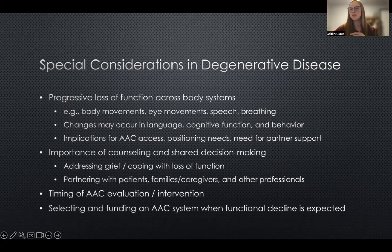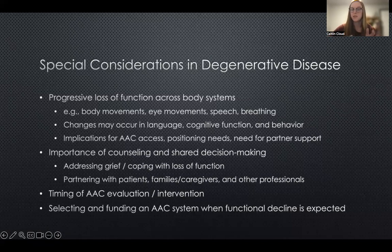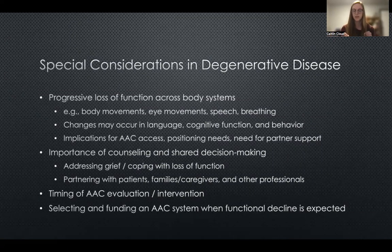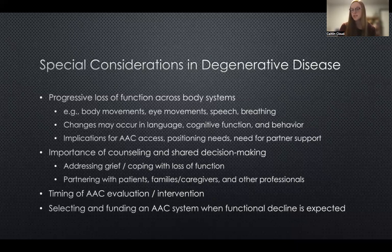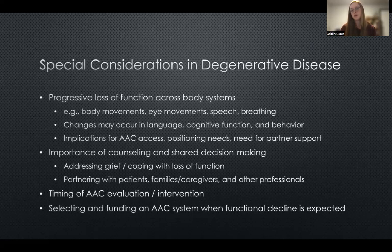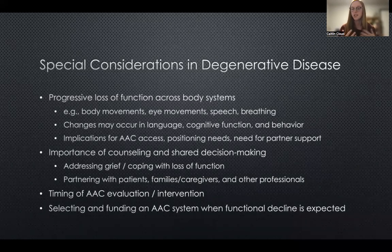Some overarching considerations for degenerative disease: when working with someone who has a degenerative condition, they're beginning to experience a progressive loss of function across different body systems. Someone with a degenerative motor condition will start to experience changes in their ability to move their body — hands, feet, arms — as well as changes in eye movements such as nystagmus or difficulty moving their eyes and general visual changes. We also see changes in speech and the ability to quickly, effectively, and clearly speak, and folks will experience changes in their breathing and respiratory support over time.